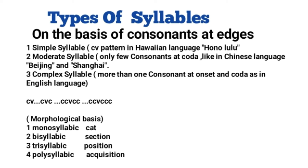The third type is a complex syllable, which means there are more than one consonant at both the onset and the coda. We find complex syllables in English. The patterns used in English include CV, CVC, CCVCC, and CCVCC patterns.